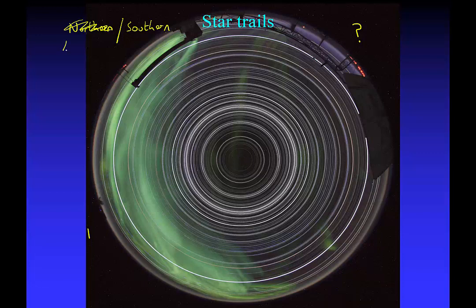Whereabouts in the Southern Hemisphere? Well, I can tell you that it's right at the South Pole. The reason why you can tell is because if you look at the patterns of the stars — following this one particular star here — it doesn't appear to rise or set. That means the location point is right at the South Pole, with stars making perfect circles right around the sky.